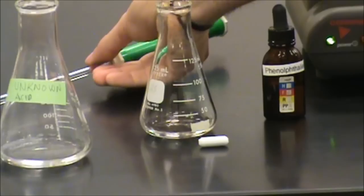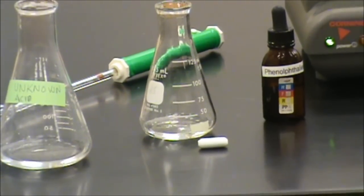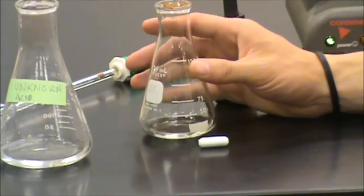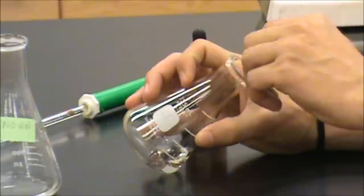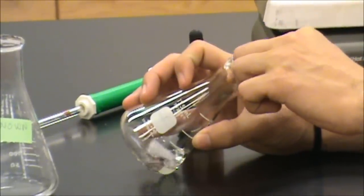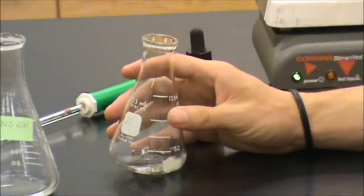If you haven't already added your magnetic stir bar, you want to gently tilt the container and slide the stir bar down the side in order to minimize splashing.